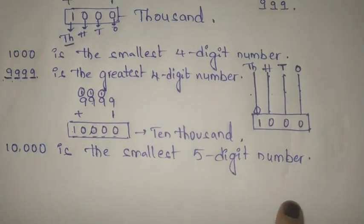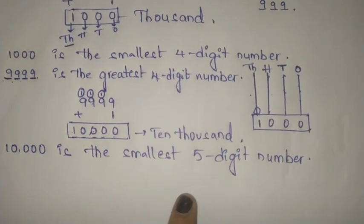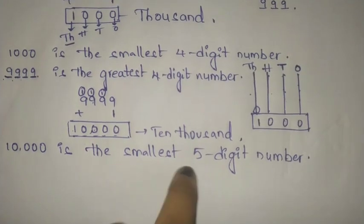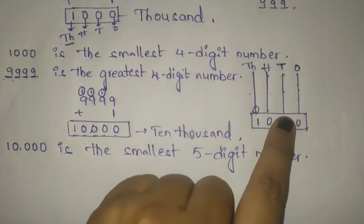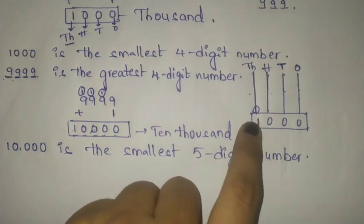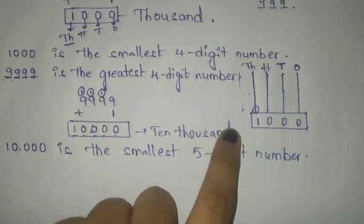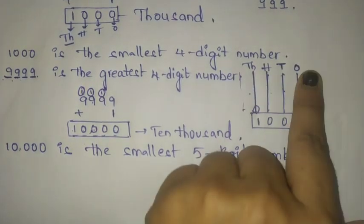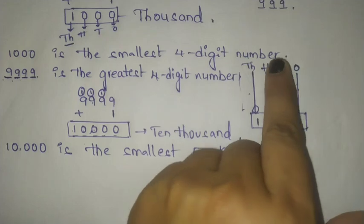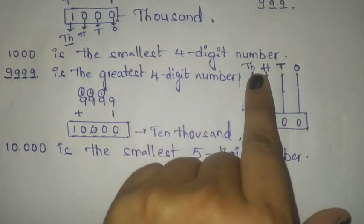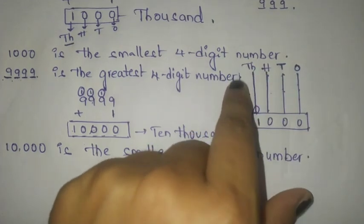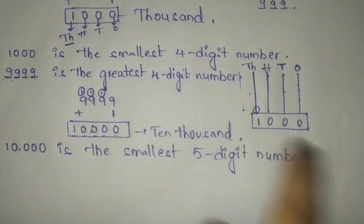To show 10,000 on the Abacus, we need five strips: ones, tens, hundreds, thousands, and 10,000.